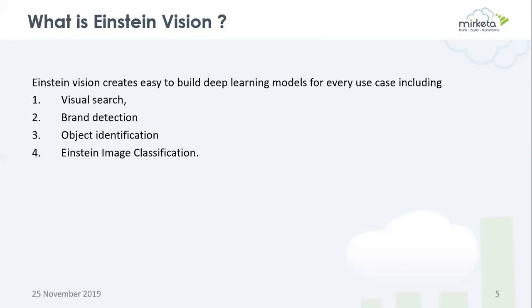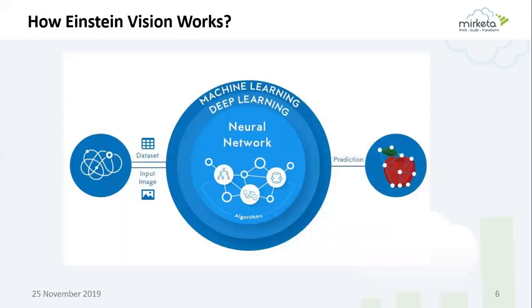Einstein Vision creates easy-to-build deep learning models for every use case, which includes visual search, brand detection, object identification, and Einstein image classification. Einstein Vision basically uses a neural network algorithm and is based on the concept of deep learning. Deep learning is a branch of machine learning, and machine learning allows computers to predict more accurately.